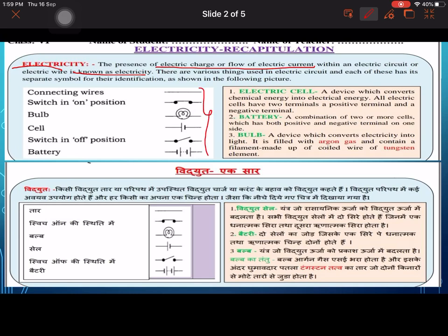These are the symbols of different things: connecting wire, switch in on position, switch in off position, bulb, cell, battery, and these are the definitions.